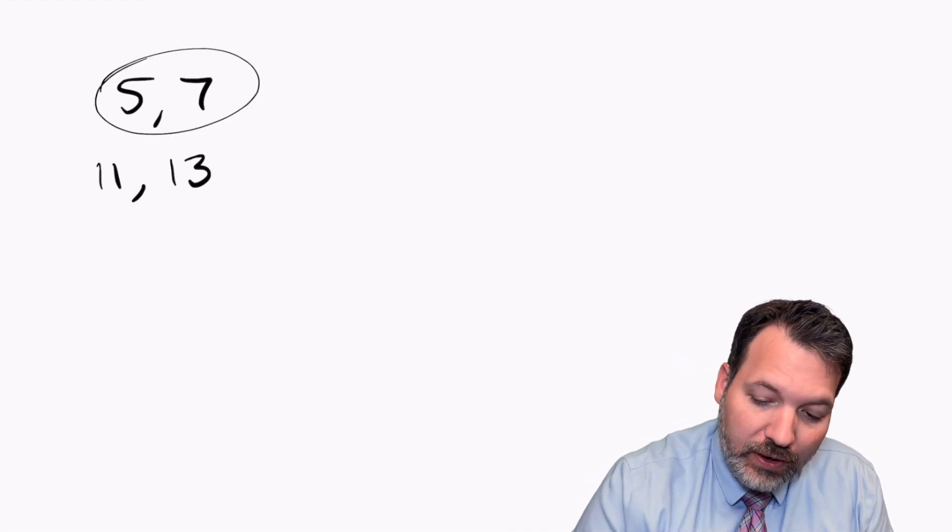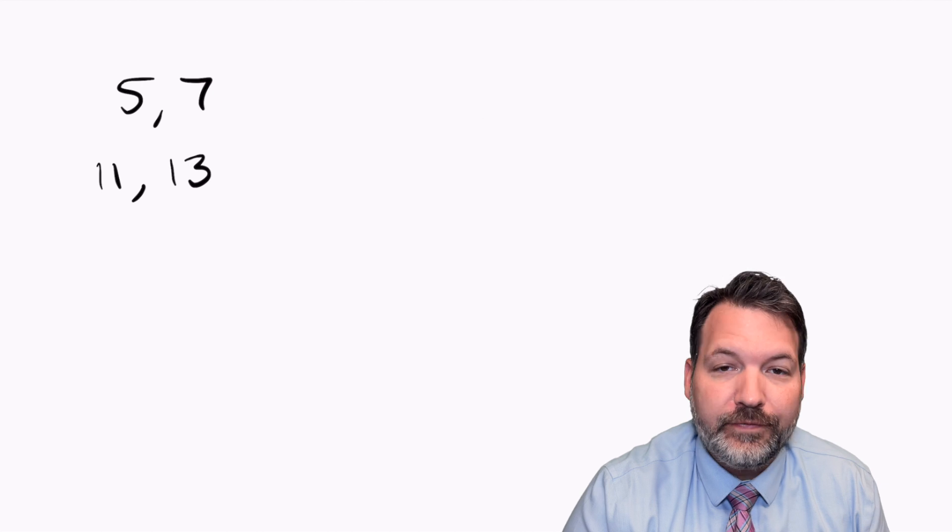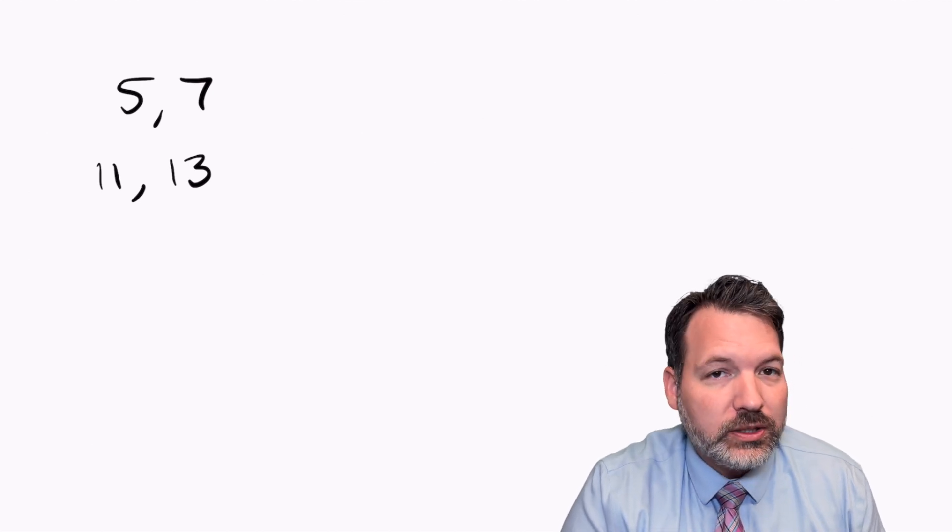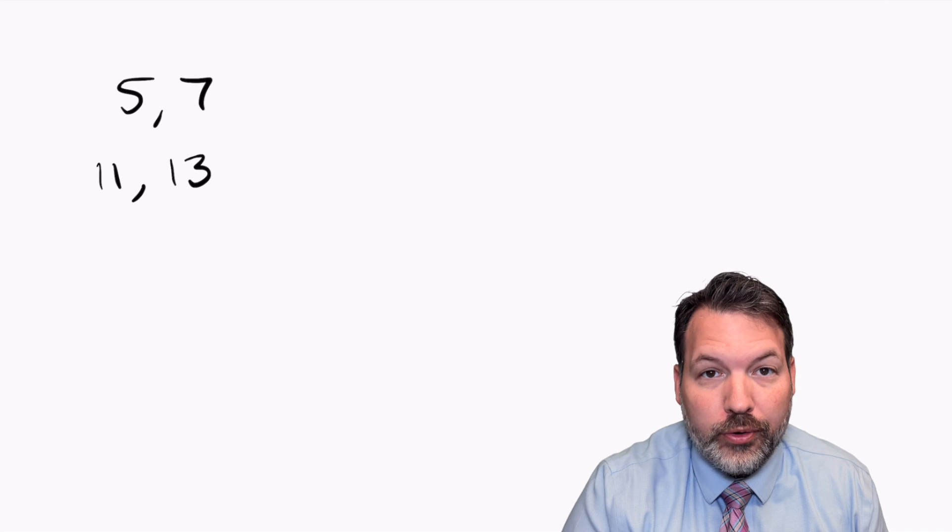The twin primes conjecture says there are infinitely many pairs of primes like 5 and 7 or 11 and 13. And we think it's true, but we can't prove it. We don't know that it's true.